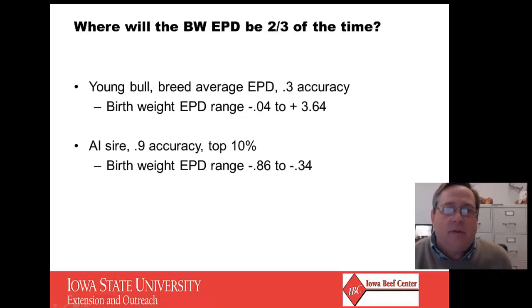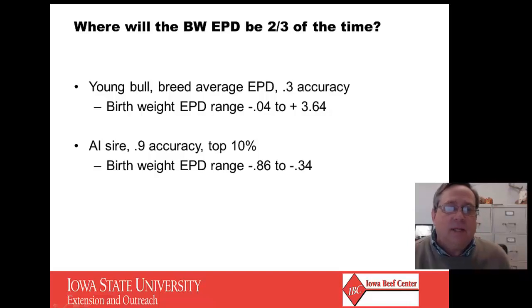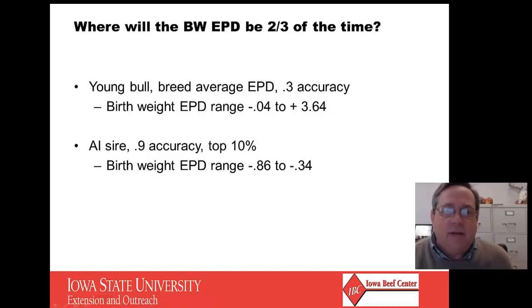Essentially the EPD on a .3 accuracy bull might be anywhere between a minus to almost plus 4 for birth weight EPD, while on the high accuracy bulls it's pretty likely going to be negative and within a very small range. So it's really important, if you can use AI, to try to look at high accuracy bulls.